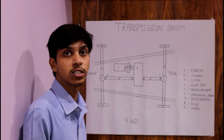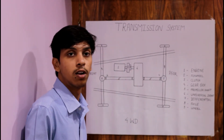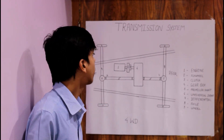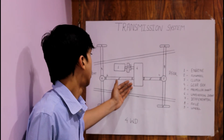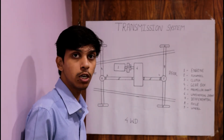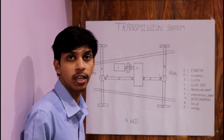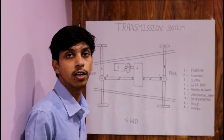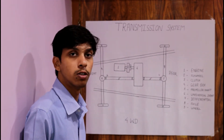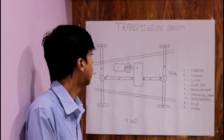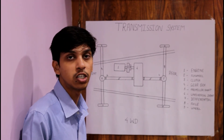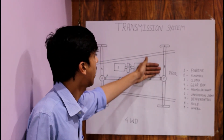In the gearbox, the torque is converted — it can be high or low as per the requirement. After the gearbox, power is transmitted to the propeller shaft and then to the differential. In the differential, a combination of bevel gear and pinion is used to transmit the power through 90 degrees. Additional gears in the differential allow power transmission during turning or different driving conditions. After this, power is transmitted into the axles and then into the wheels.